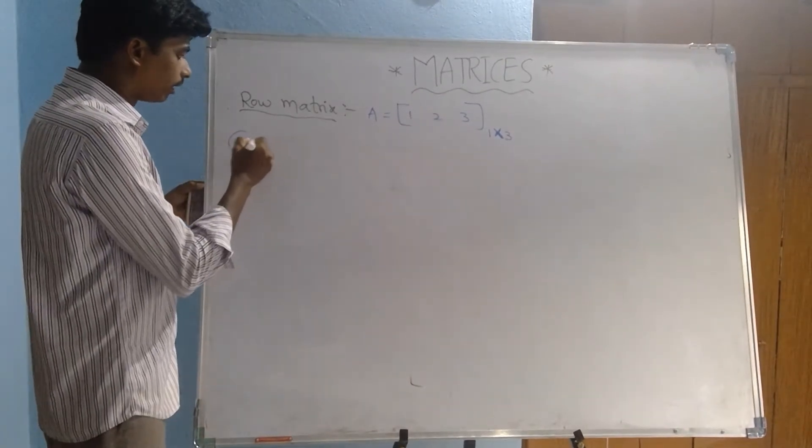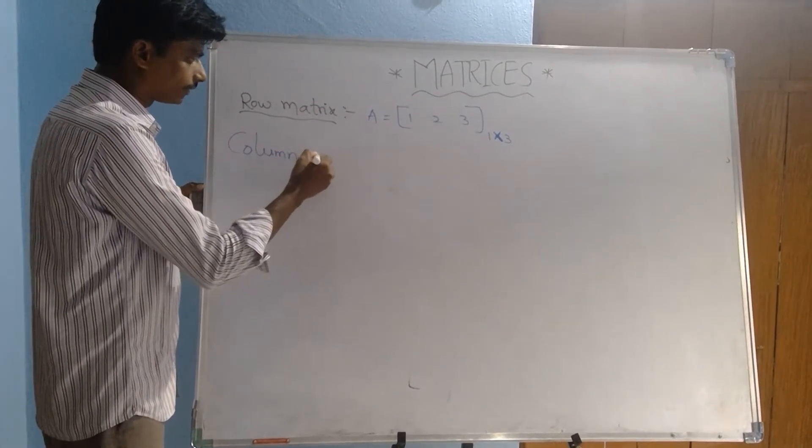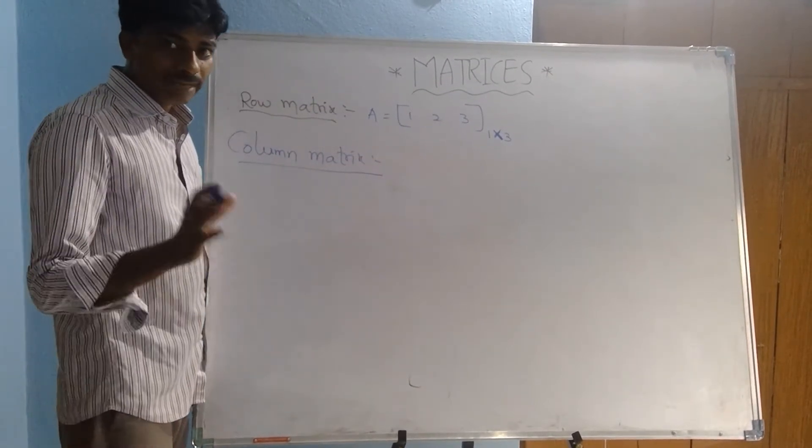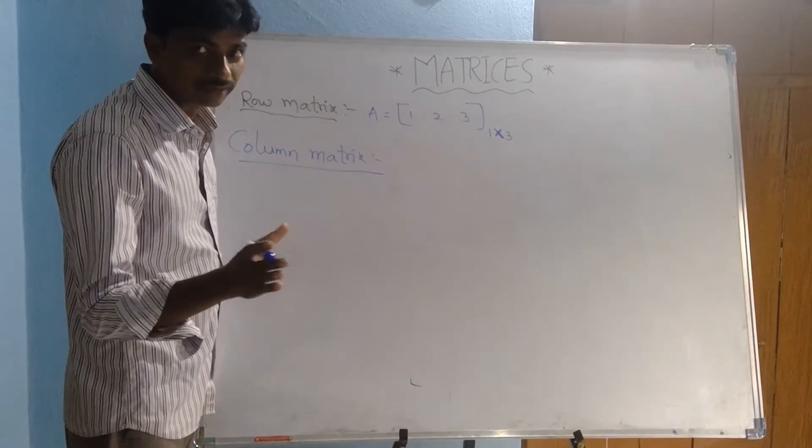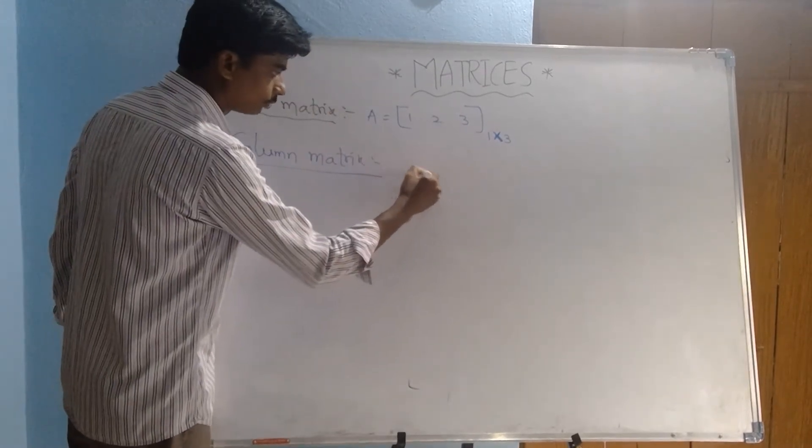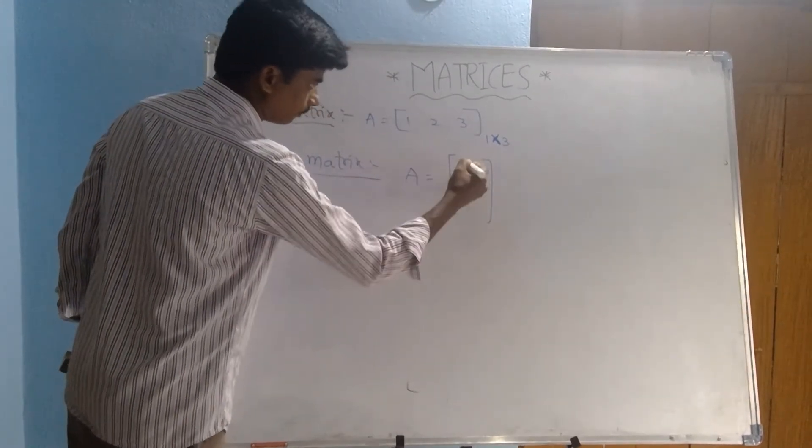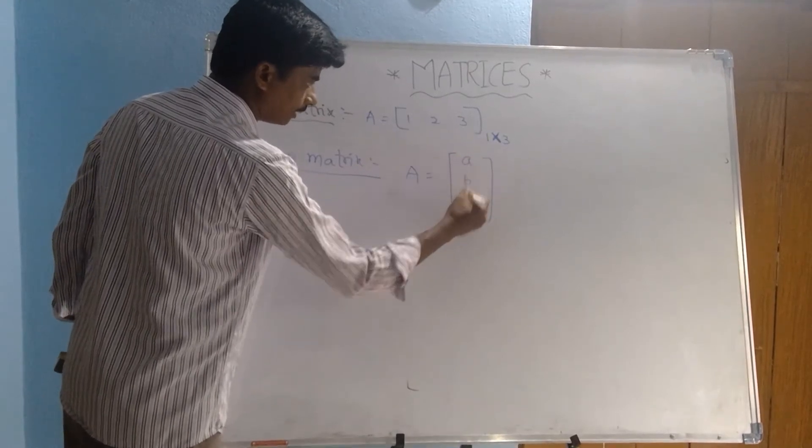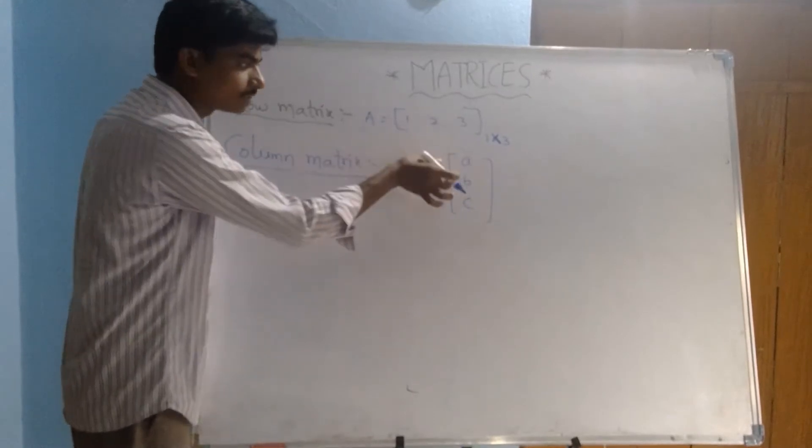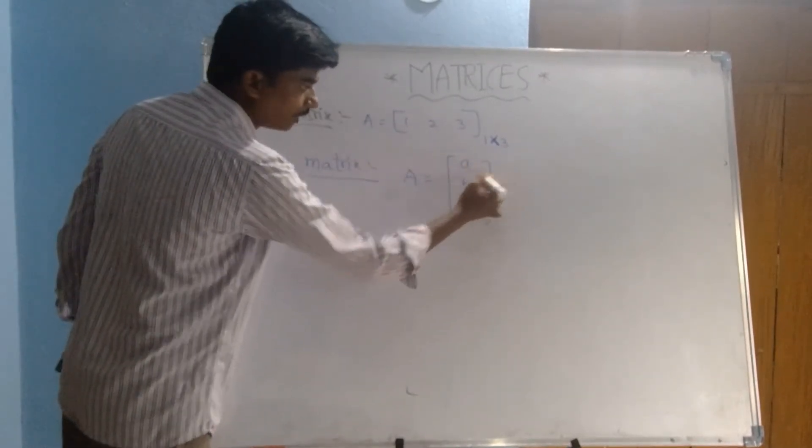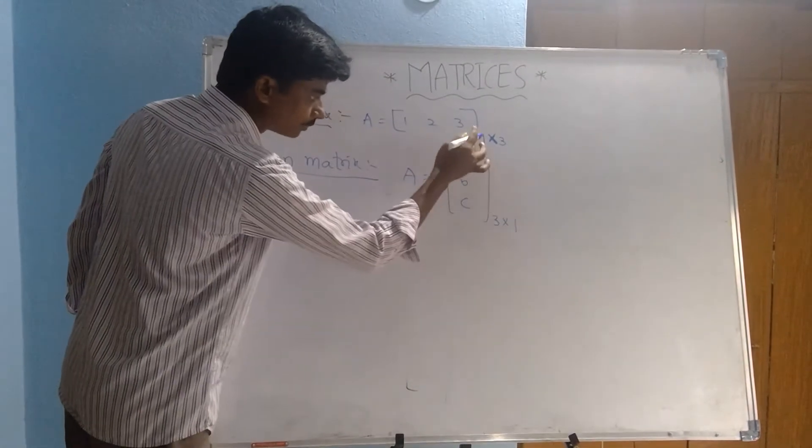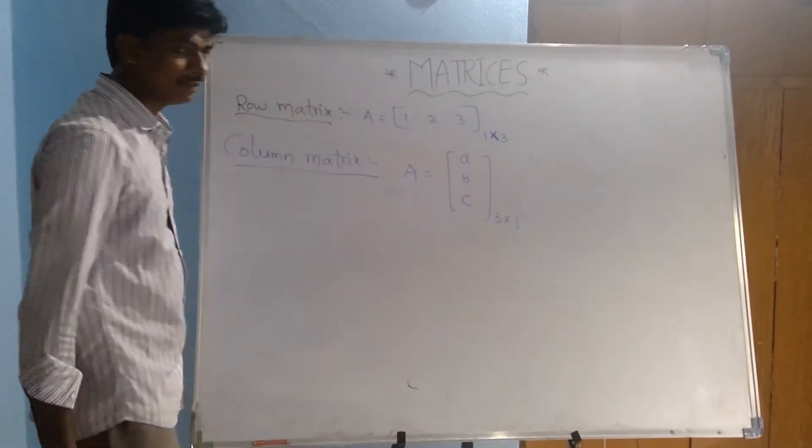Next, column matrix. A matrix having a single column is called a column matrix. This is also single column: A, B, C. Small alphabetical elements, we have to take these called as elements. How many rows? Three rows: first row, second row, third row. How many columns? One column only. This order is 3 by 1.